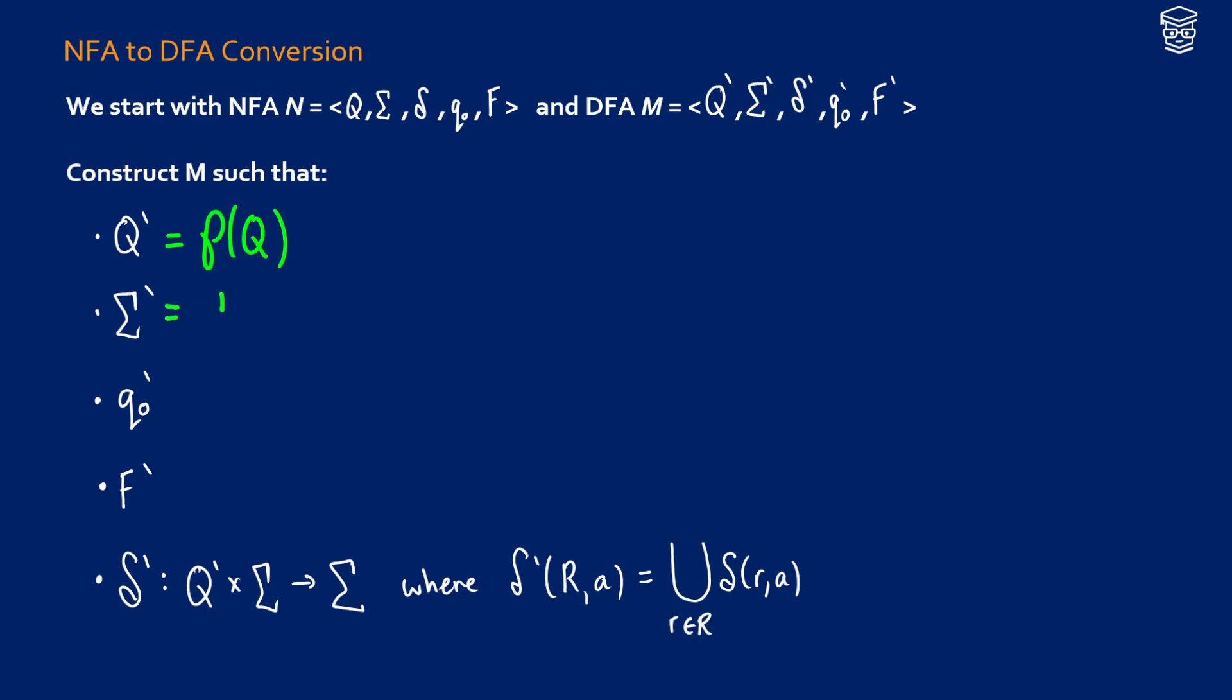Our alphabet is going to be exactly the same across our two machines. Our new start state is going to be our old start state, plus any of the arrows that we get that go from reading a nothing input. So for example, if Q0 has an empty arrow going to Q1 in the NFA, then Q0 and Q1 would be accept states in the DFA.